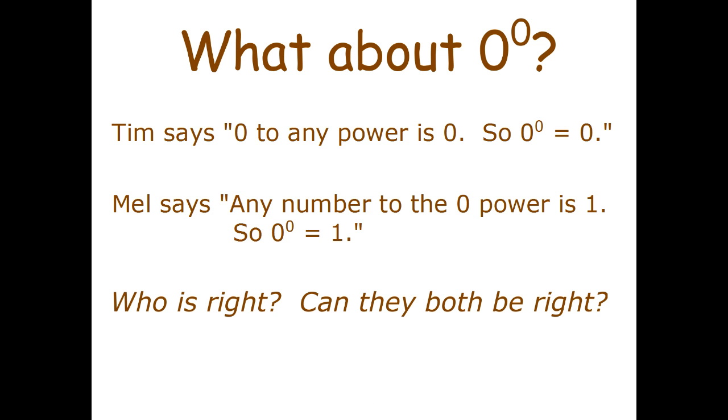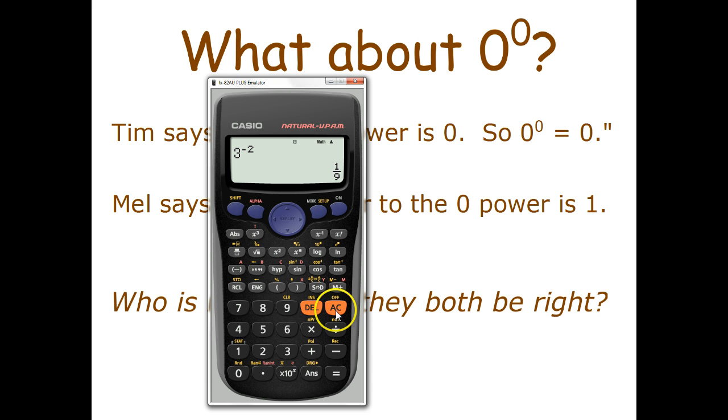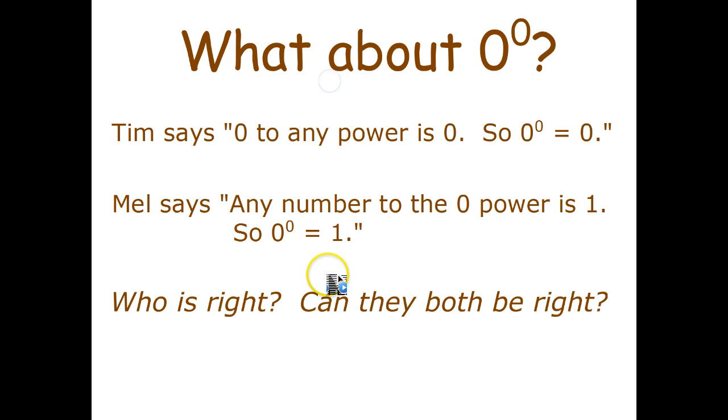Well let's see what happens if we try to do it on the calculator. 0 raised to the 0 power and the calculator says you can't do it. Math error. There isn't an answer. Math error. So any number raised to the 0 power equals 1 except 0 to the 0. We call that undefined. 0 to the 0 is undefined.